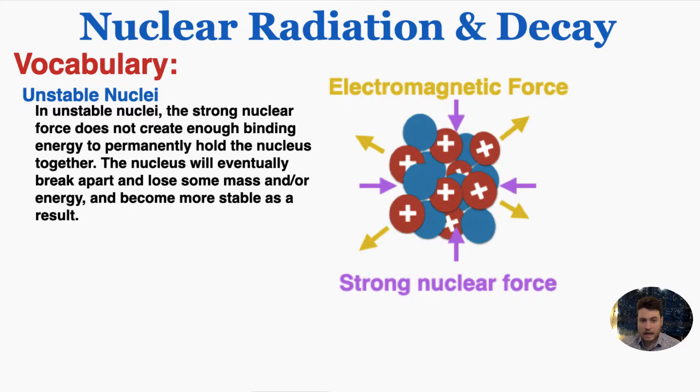Nuclear radiation and decay occur in unstable nuclei, where the strong nuclear force does not create enough binding energy to permanently hold the nucleus of an atom together. The nucleus will eventually break apart and lose some mass and/or energy, and become more stable as a result.